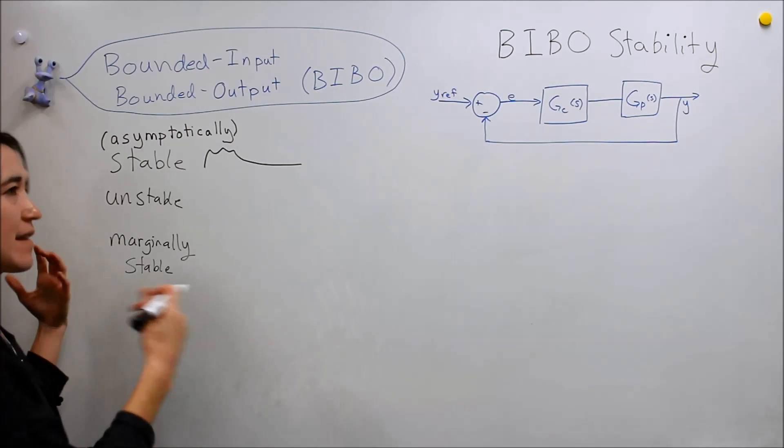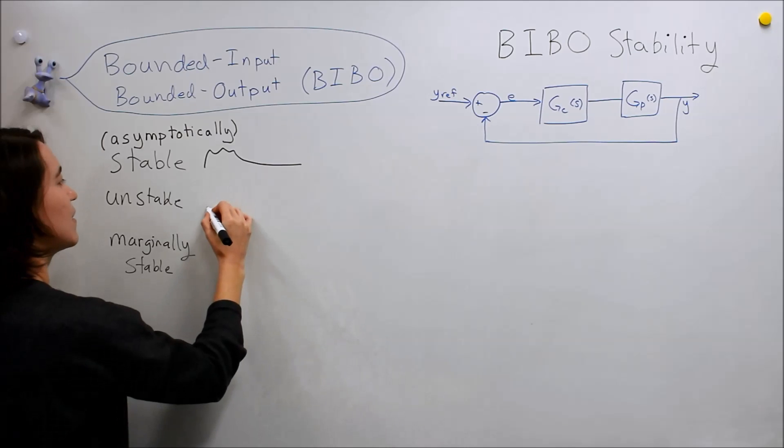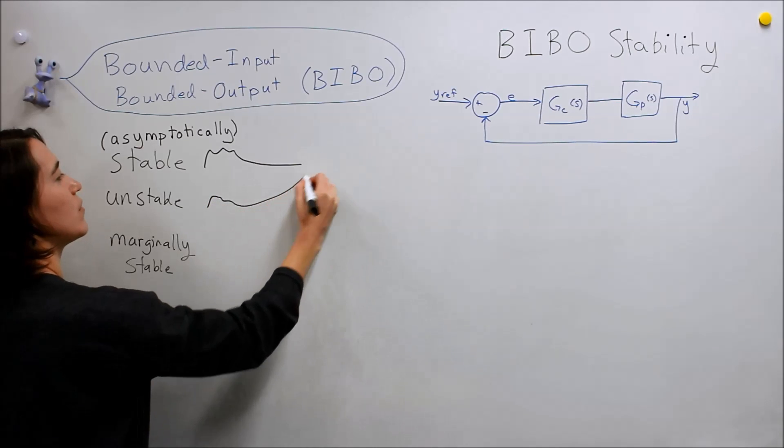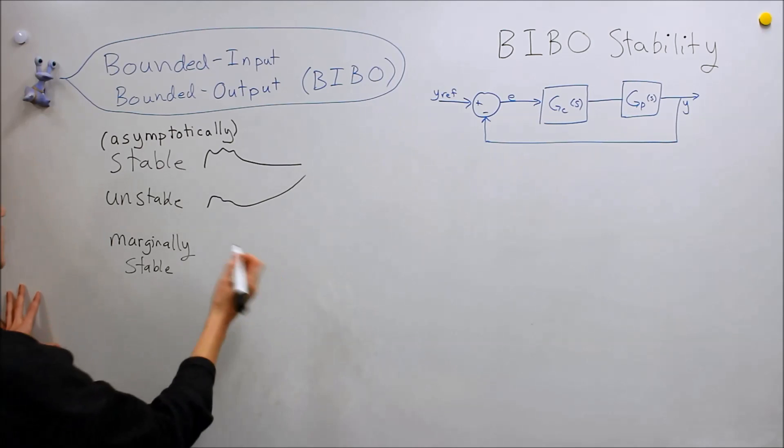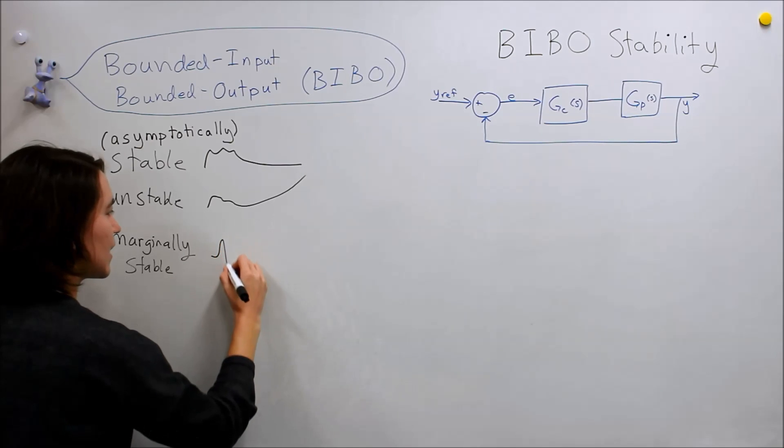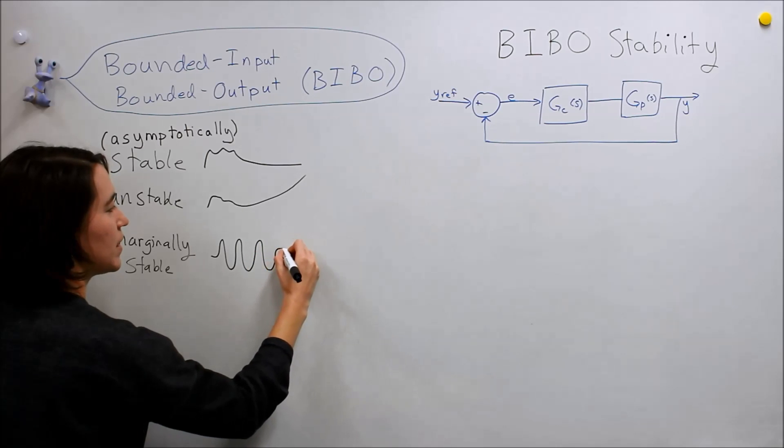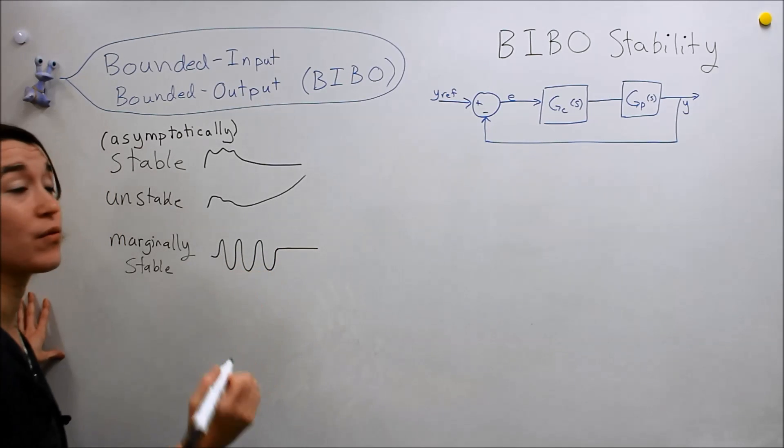And unstable means that as time goes to infinity, our function will also go off into infinity. And marginally stable was somewhere in between, so it could be oscillating at some constant rate or it could be some constant non-zero value.